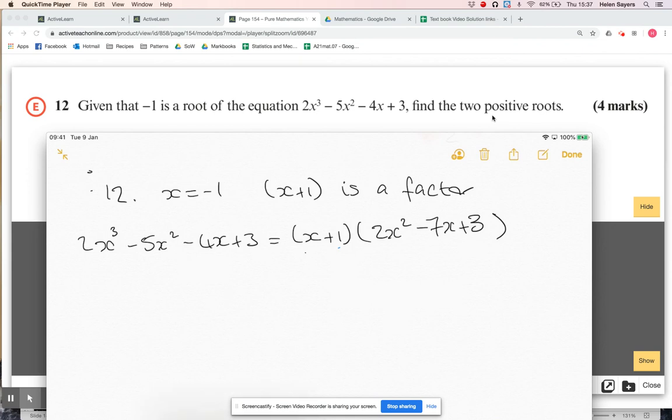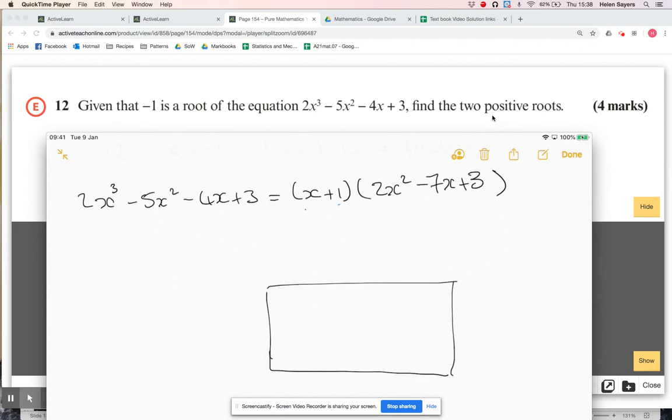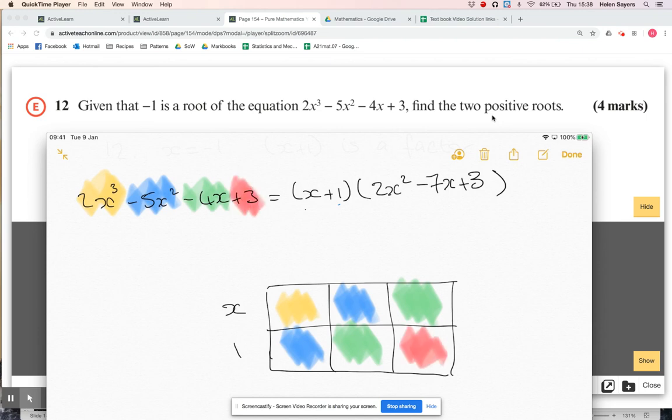If you weren't too happy with that, your alternative is to do the division. You can either do long division, or the reverse grid method, which is probably more common. So I'm dividing by x plus one. That box is going to give me my cubed term, those two will both be x², they will both be x, and that will be my constant.